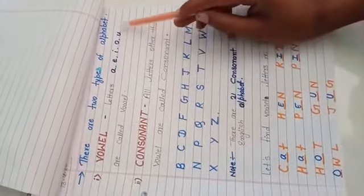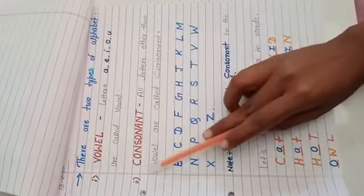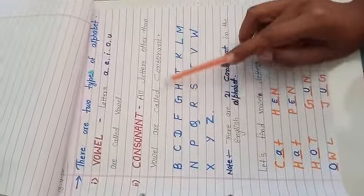a, e, i, o, u are called vowel, and consonant - all letters other than vowel are called consonant alphabet letters.